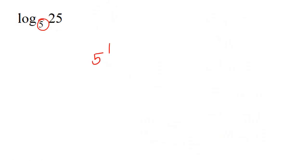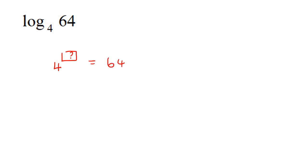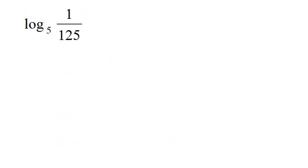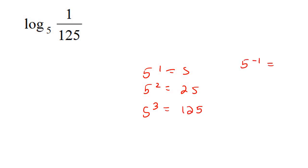Let's do four more examples. This one says 5 to the power of what gives us 25, so 5 to the power of 2 gives us 25 — the answer is 2. Next: 4 to the power of what gives you 64? 4 to the 1 is 4, 4 to the 2 is 16, 4 to the 3 is 64 — so the answer is 3. Now we have 1 over 125: 5 to the minus 1 is 1 over 5, 5 to the minus 2 is 1 over 25, and 5 to the minus 3 is 1 over 125 — so this answer is negative 3.